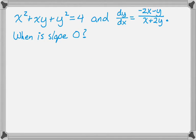The next thing I want to do is, I have all this. So I know the relation, the implicitly defined function. And I know dy/dx. And I want to know when is the slope 0.